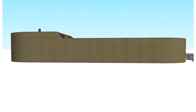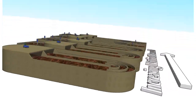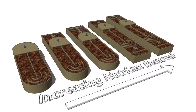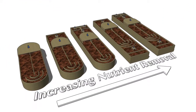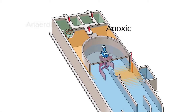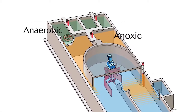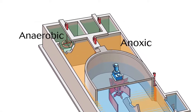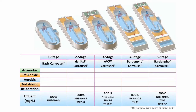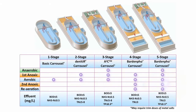The basic carousel process can be easily modified to biologically remove the nutrients nitrogen and phosphorus from the wastewater. By adding anoxic and/or anaerobic selector basins to the carousel system, 2, 3, 4, or 5 stage plants can be configured based on the effluent requirements.